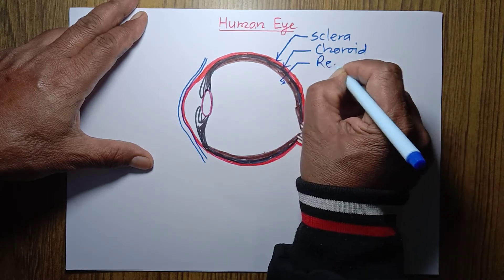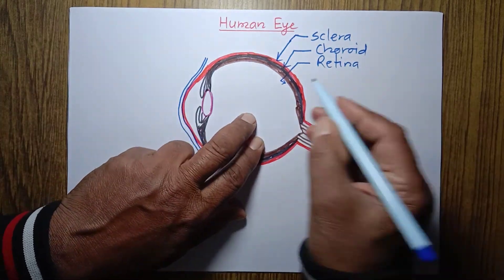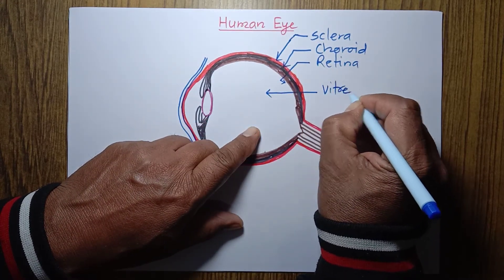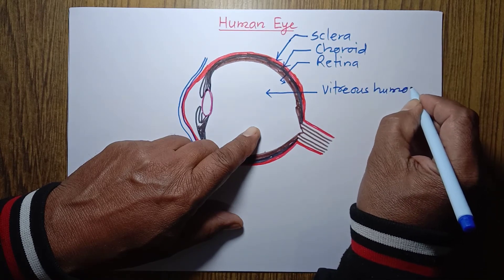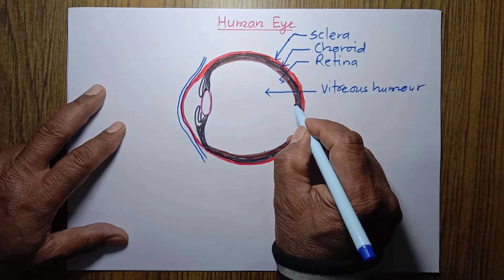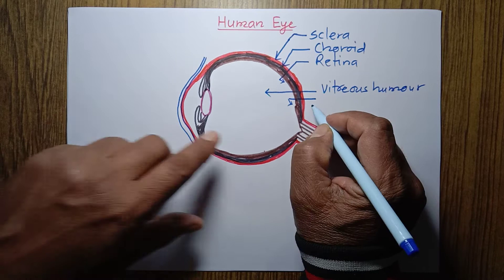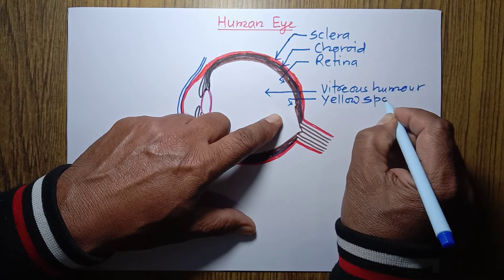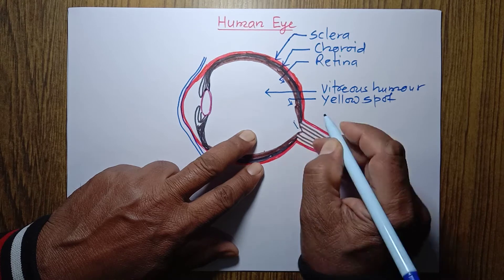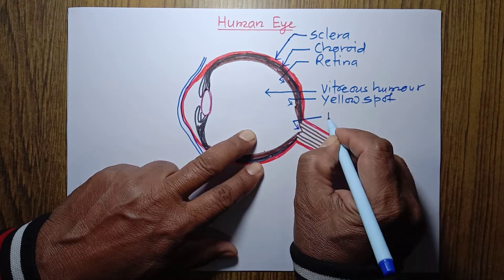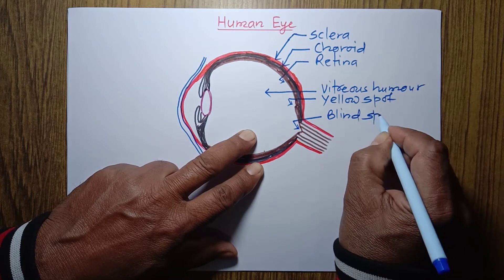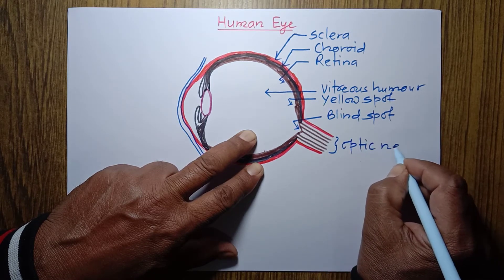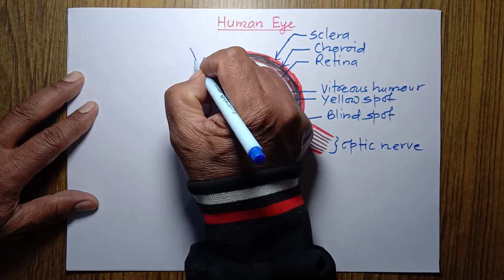The innermost layer is retina. This part is filled with vitreous humor. Now this constriction — a little constriction wall-like structure — is called yellow spot, and this part is called blind spot, and this part is called optic nerve. This here is conjunctiva.